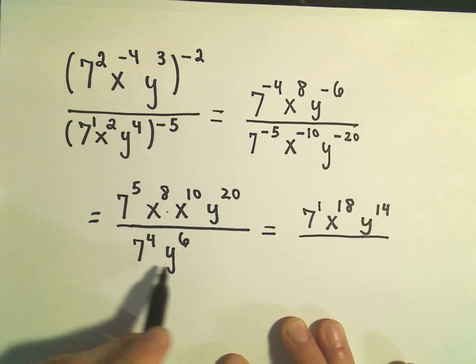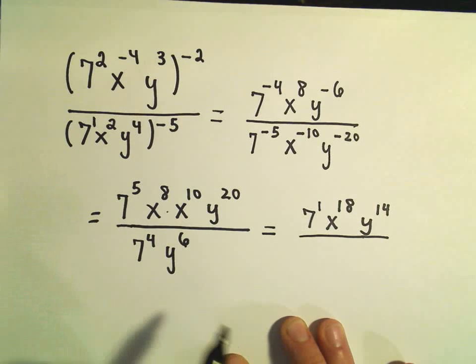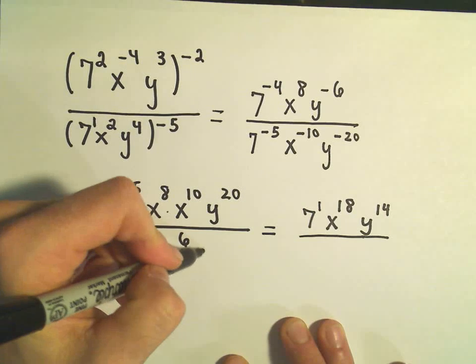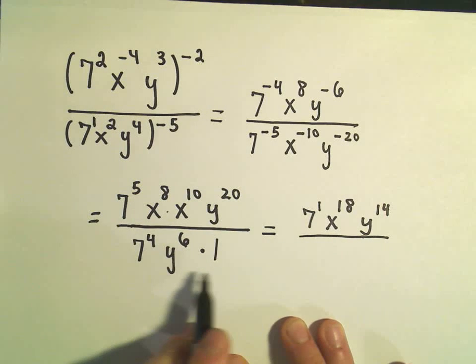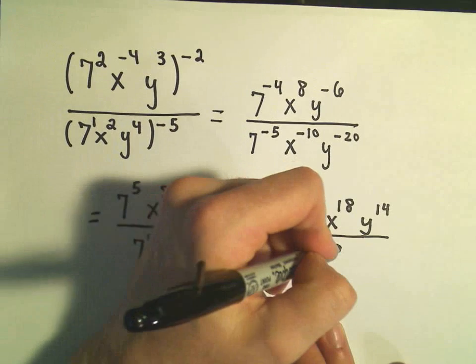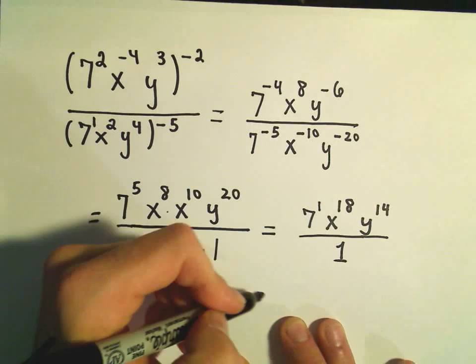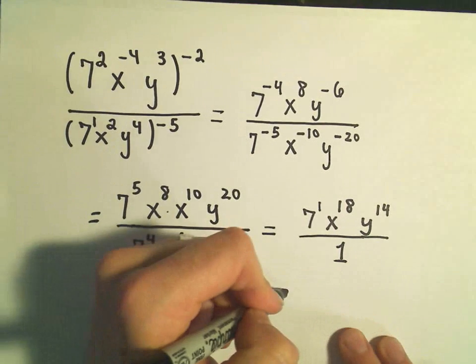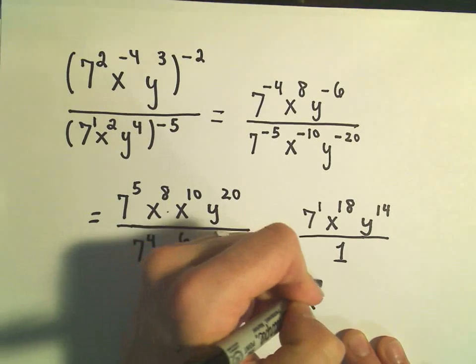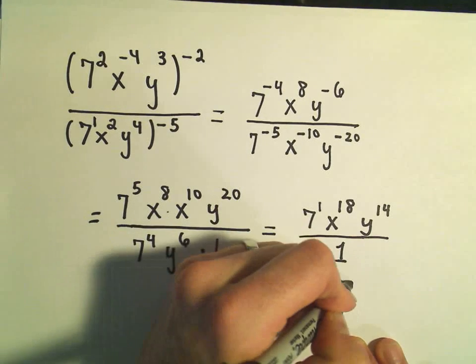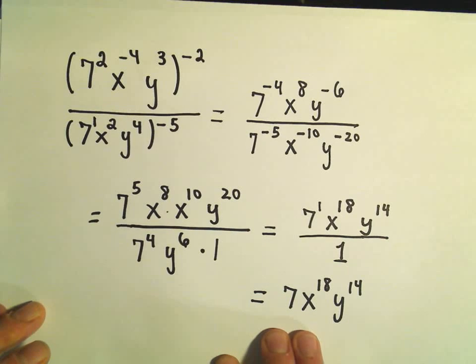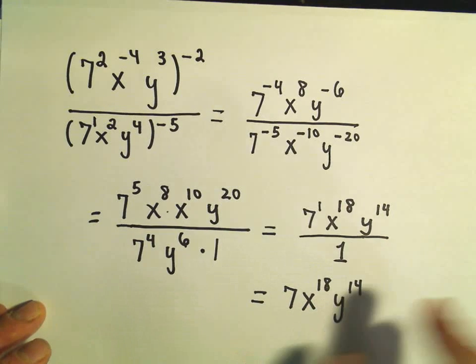And really, we canceled out everything in the denominator. But you can always imagine there was a times 1 in the bottom. It doesn't change its value. So there's still a 1 in the denominator. But when we divide by 1, we typically don't write it as a fraction. So we could write this final, our final answer is 7x to the 18th, y to the 14th power.